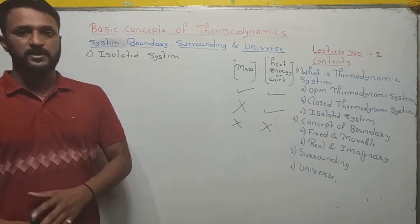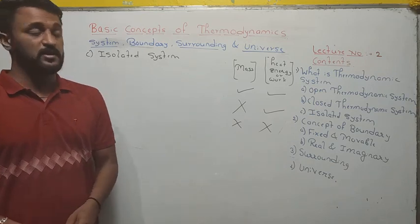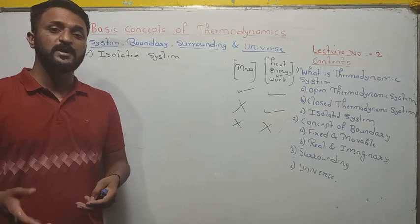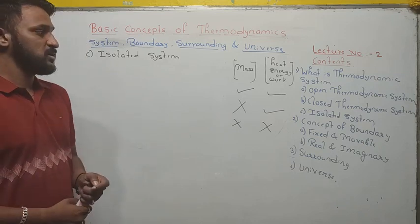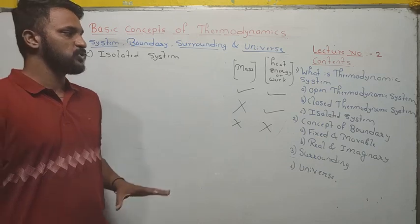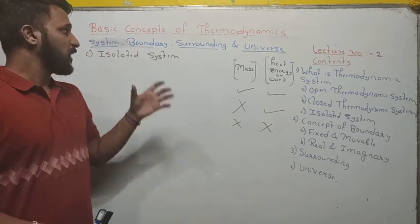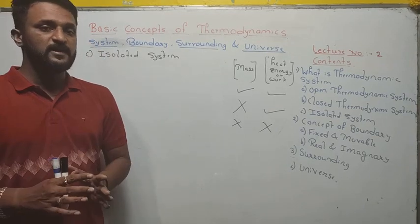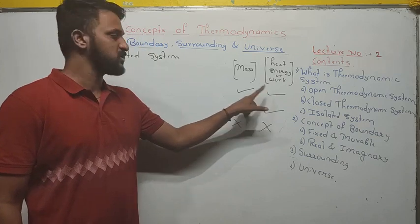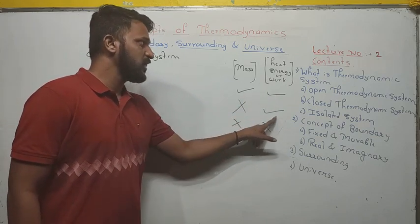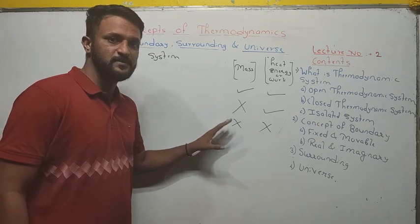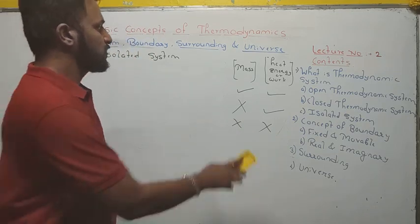If we try, something may happen, but in practical situations some leakage will be there. However, you can take the universe as an example of an isolated system, because we think that the universe is one entity and nothing is beyond it — nothing is going out and nothing is coming in. So the universe is an example of an isolated system. To summarize: an open thermodynamic system is one in which both mass transfer and energy transfer take place across the boundary. A closed thermodynamic system is one in which only energy or heat transfer takes place — there is no mass transfer. An isolated system is one in which there is neither mass transfer nor energy transfer.